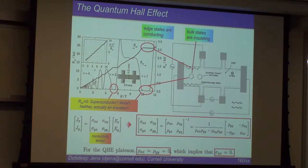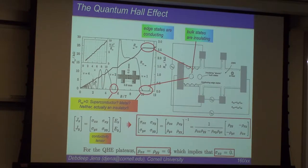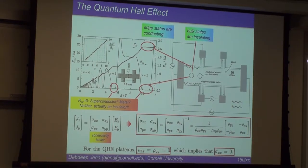The basic idea is you're doing a Hall effect measurement: pushing current in the x direction through a current source, and measuring voltages both in the x and y directions. Rxx is the voltage along those two terminals divided by the current between them, whereas Rxy is the transverse voltage divided by the current. What is quantized here is the transverse resistance or transverse conductance.